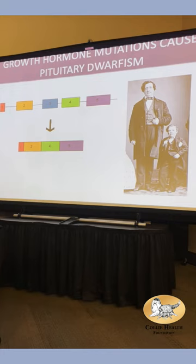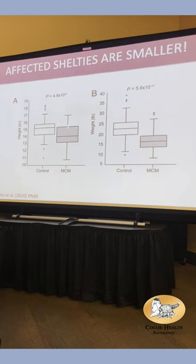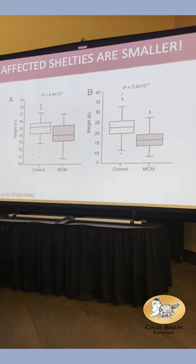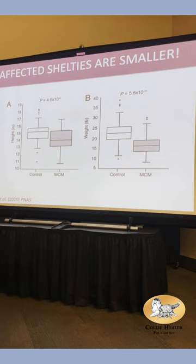We recollected all the information and look what we found. Affected dogs here versus controls — the height average was over 15 inches for controls and just under 14 for affected dogs, a very significant p-value. And look at weight: a big difference — just over 15 pounds versus about 23 pounds on average. It is about size, and nobody knew it. It's the smaller dogs.